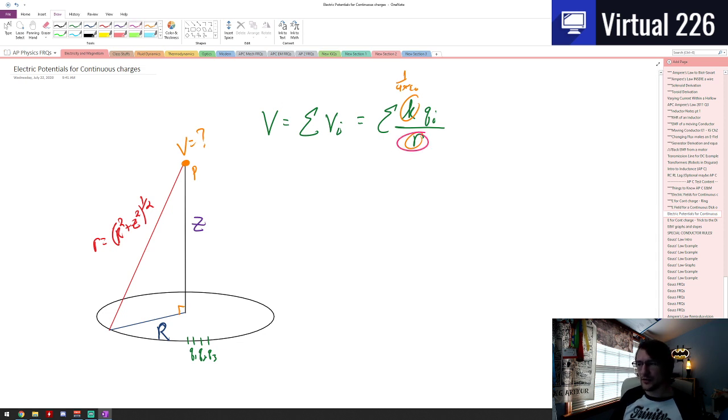And if we note that this value of R really is in terms of other things, I can just say that this is equal to K, or one over four pi epsilon naught if you like writing that, over big R squared plus z squared to the one-half power, times the sum of each of our individual charges.